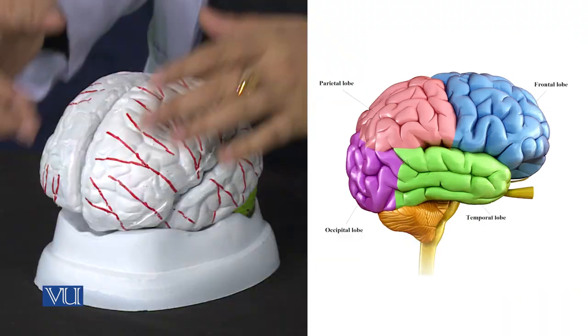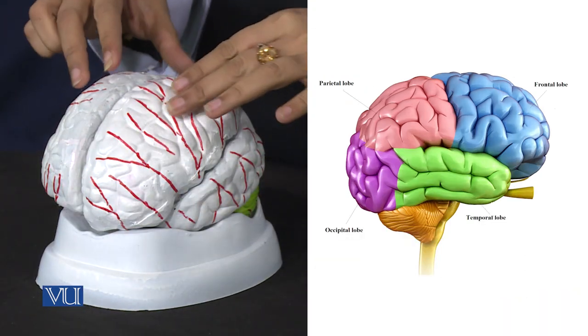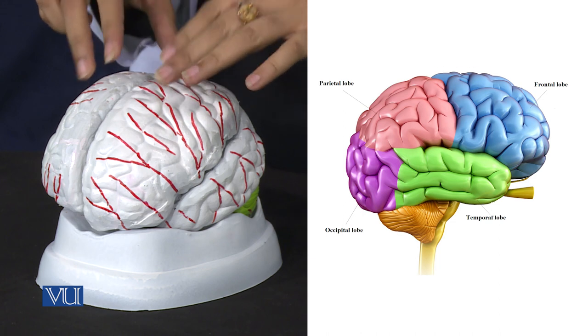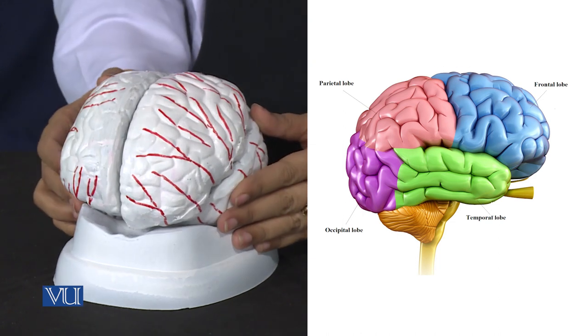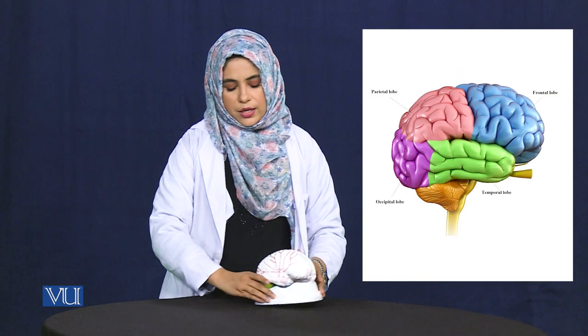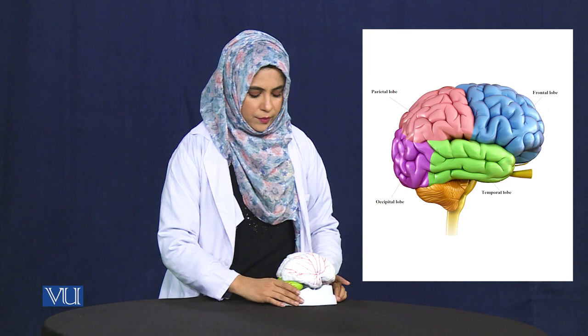Each hemisphere has been divided into four lobes: the frontal lobe, parietal lobe, temporal lobe, and occipital lobe.